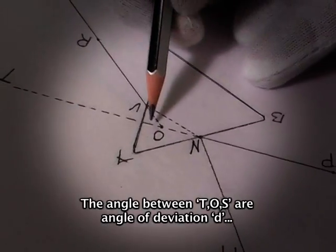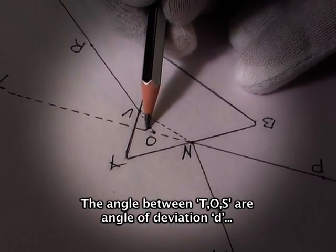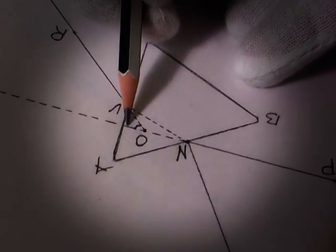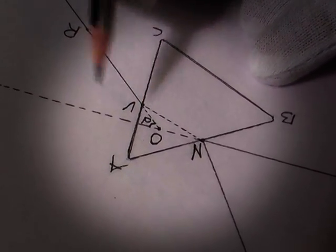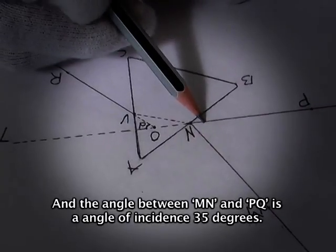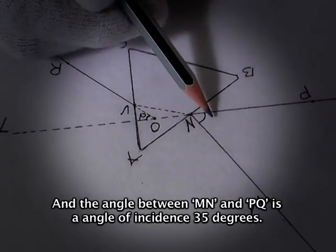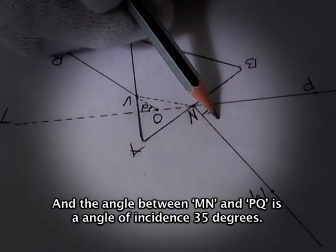The angle between TOS is the angle of deviation T, and the angle between MN and PQ is the angle of incidence, 35 degrees.